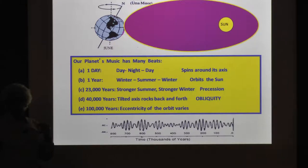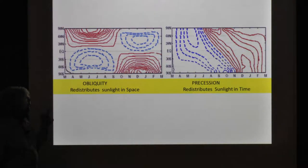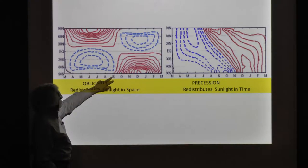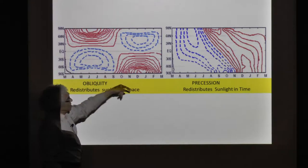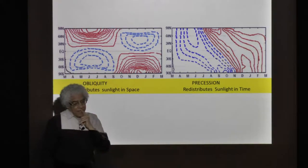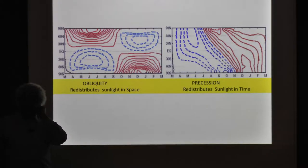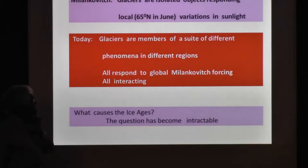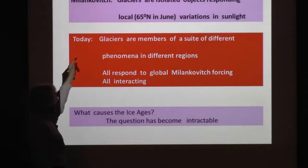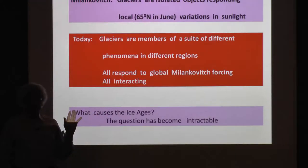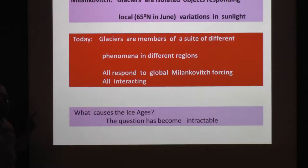This picture shows in latitude and time what happens if you change the tilt—this is how sunlight will change—and when you change precession. Now you can see what's the problem with Milankovitch's hypothesis. Milankovitch's glaciers are isolated objects in high latitude responding to local sunlight. He chose sunlight at 65 degrees north in June. The problem is you've thrown out all the information—you don't take into account that tilt has a completely different effect than a change in precession.